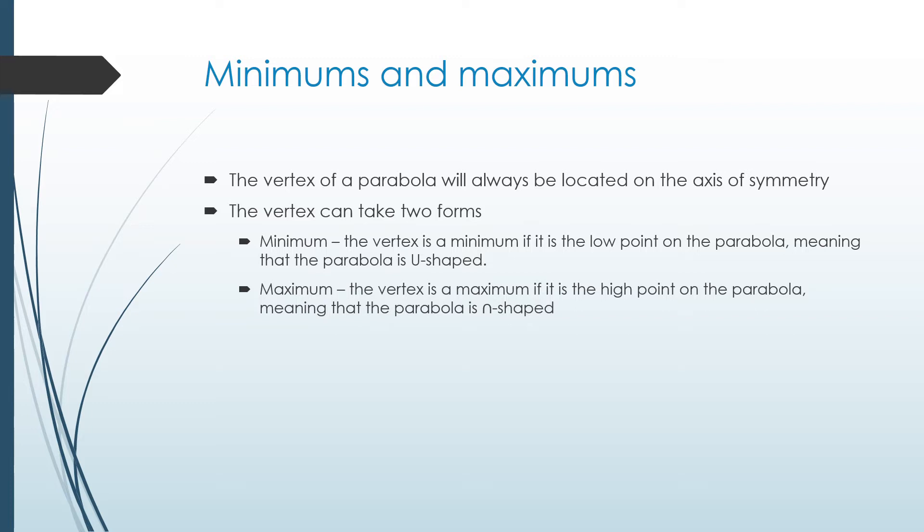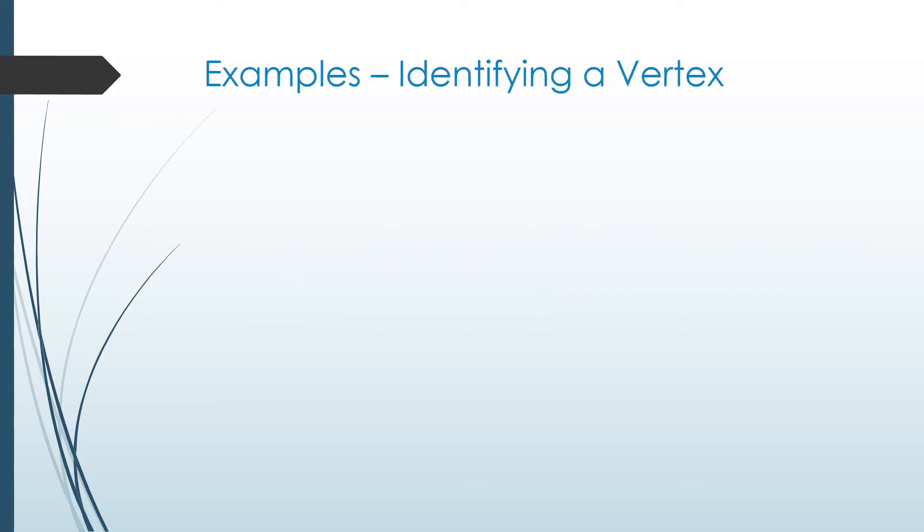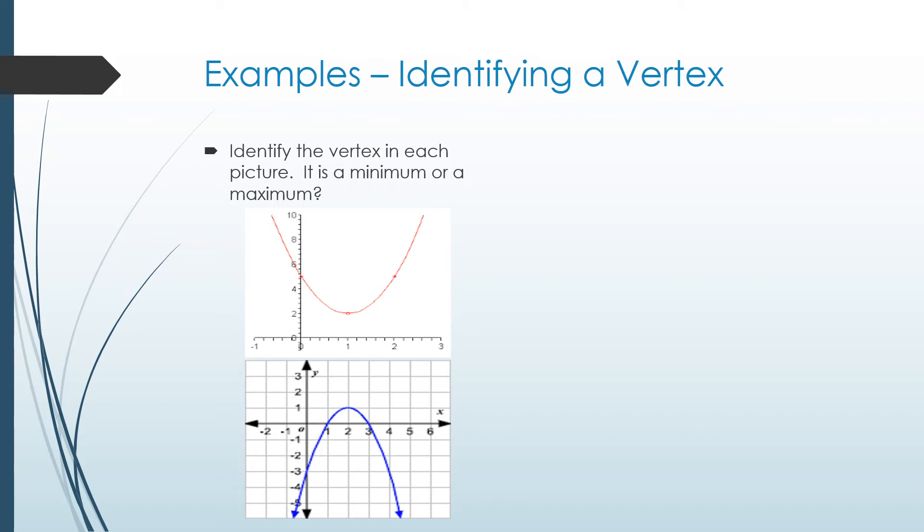Let's take a look at an example of identifying a vertex. Look at each picture and identify the vertex, then identify if it's a minimum or a maximum. Pause the video at this point to give yourself a chance to do this on your own. For the red parabola, the vertex is one, two, and because it's a smiling parabola, it's a minimum point. For the blue one, the vertex is two, one, and because it's a frowning parabola, that means it is a maximum point.